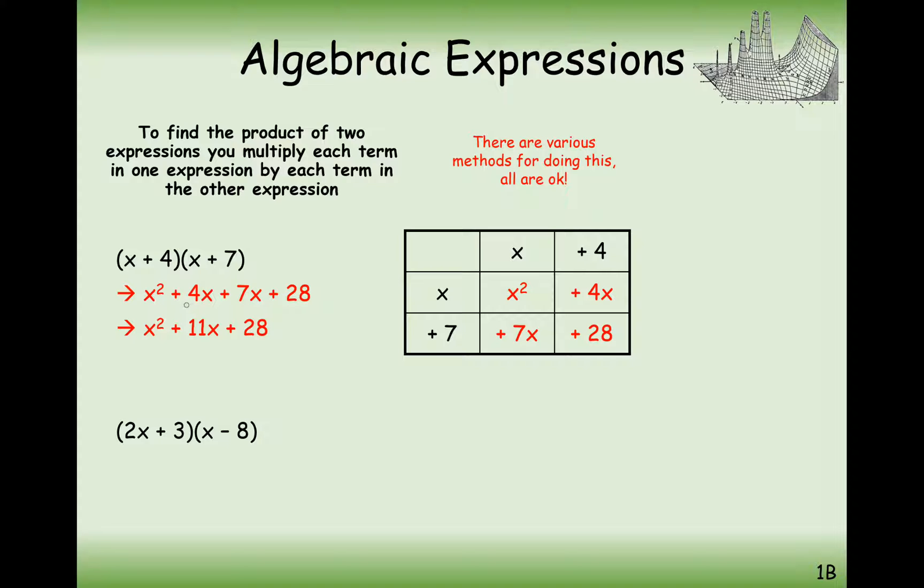You then simplify by adding each of these red terms together. Now just a note to make is that you can only add powers of x that are equal to each other. So we can add this 4x and the 7x here. The 28 can't get involved because that hasn't got any other terms in here where it's just a number on its own. And the x squared can't get involved in simplifying here because it hasn't got another x squared to simplify with. So we just get x squared plus 11x plus 28.